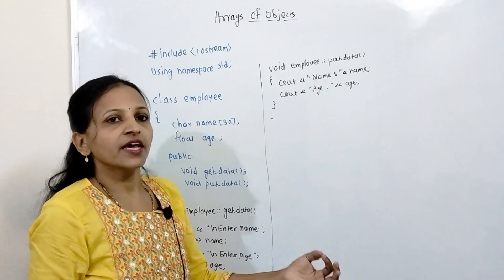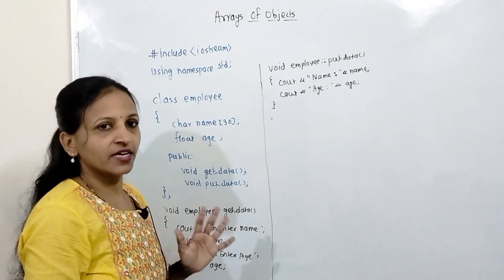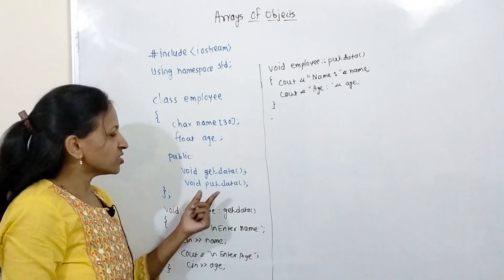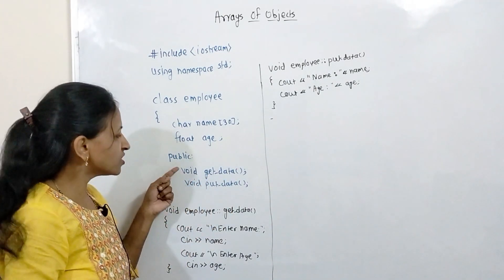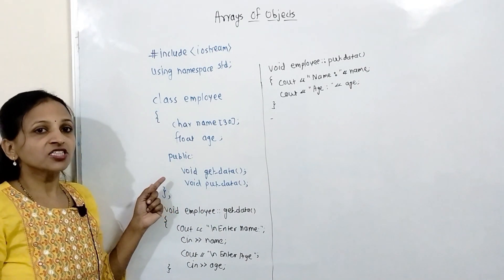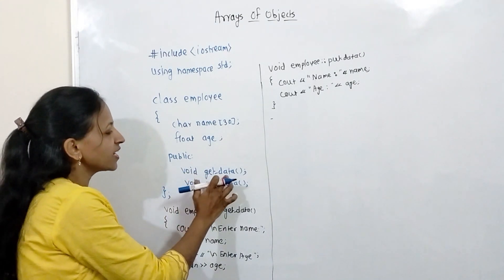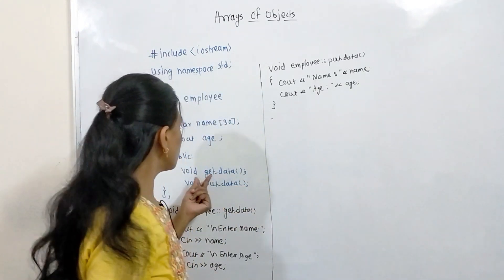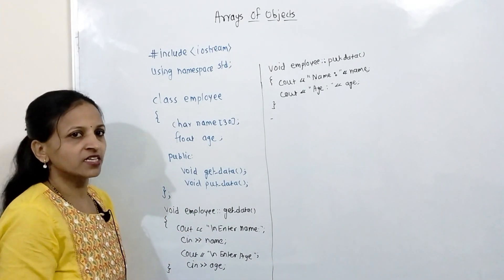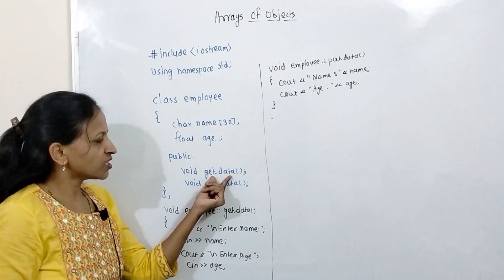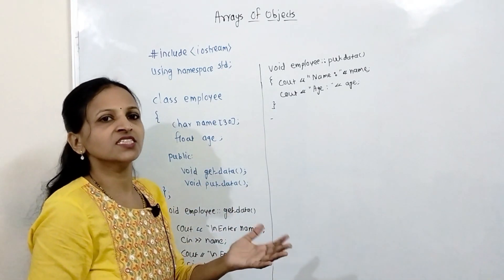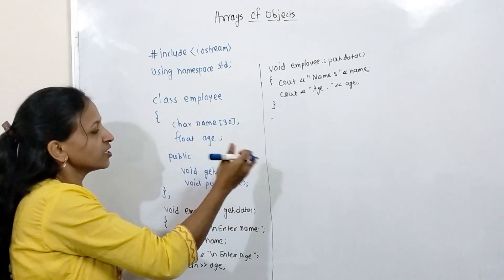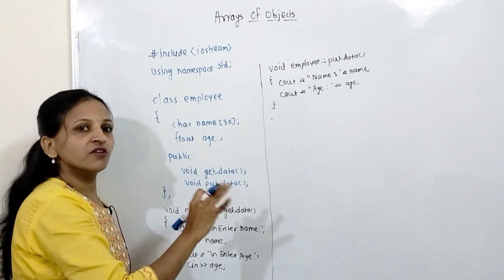This employee has name and age with it. Now I am writing two member functions: getData and putData. We have just declared these two member functions inside the class and we are going to define them outside the class. The getData function is not returning anything — we are just accepting data from the user using cin statements, so no need to return anything. Similarly, putData just displays data, so the return type is void for both. No arguments are passed to these functions.